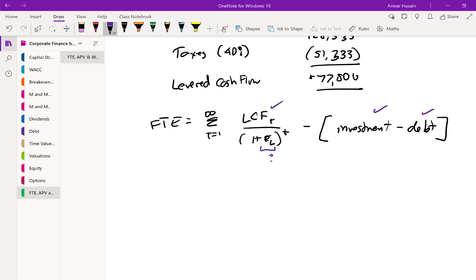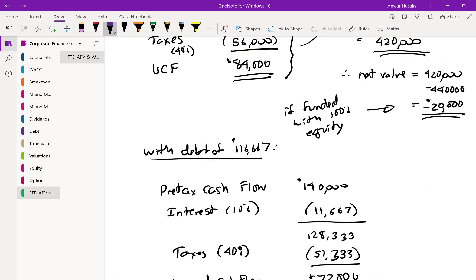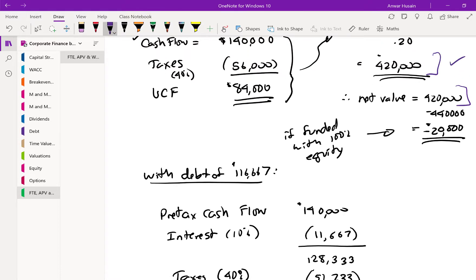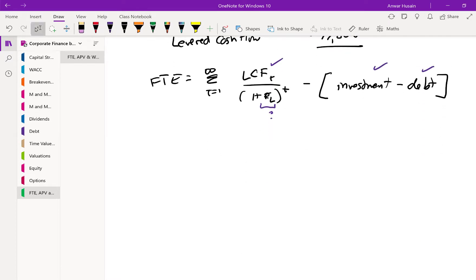Now the first thing I'm going to calculate is the unlevered value of this project. If we go back up here, the net value of this project, if it was financed by equity, was $420,000. Remember that the value of the levered value of a project or firm is equal to the unlevered value plus debt times the tax rate. This is a formula from case two of the M&M model.